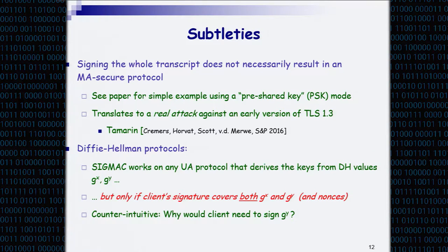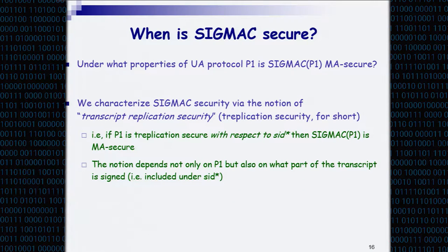Another subtlety: for a Diffie-Hellman protocol, this compiler works, but only if the signature includes both g^x and g^y — both exponents. The client signing its own exponent is obvious, but why would it need to sign the server's exponent? There's no intuitive reason for that, but it turns out that if you don't do that, the compiler will not work. Things are less straightforward than I would have assumed to start with — I started this by writing a proof in three minutes on paper, but it took about three months.